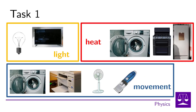Luminous appliances, i.e. those that produce light, are the light bulb and the television. Thermal appliances are the washing machine, the oven, or the refrigerator. We class the fridge as a thermal appliance because its purpose is to remove heat from the interior space where we store food. And the motion appliances are the washing machine, printer, fan, and shaver.